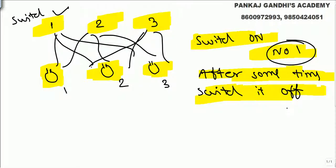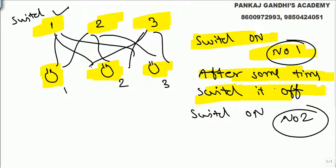Now we switch on switch number two. After some time with switch two on, we open the door. We all know the bulb which is glowing is connected to switch number two.